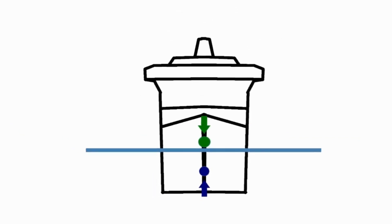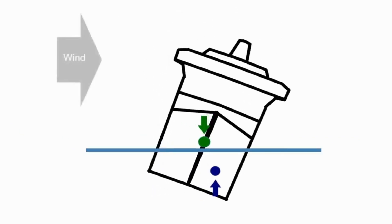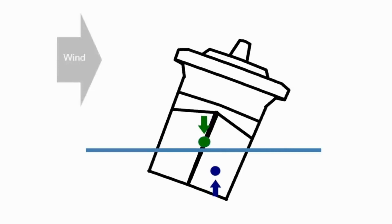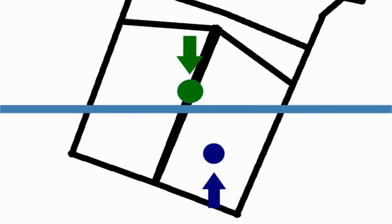What happens if we apply an external force — for example, some wind comes along? Well, that wind is fairly obviously going to push the ship over to one side. But why doesn't it just topple straight over? If we look down at the bottom, we can see that the center of buoyancy has slid off to one side.